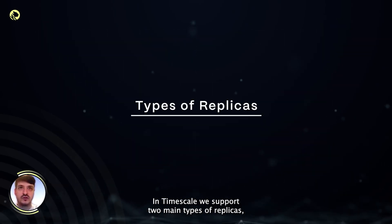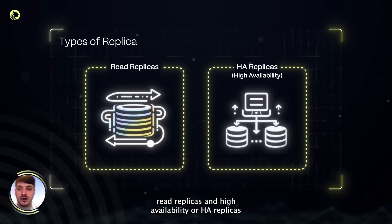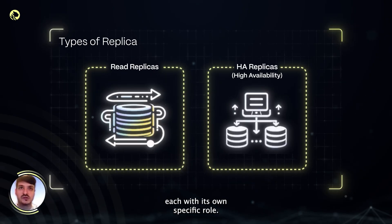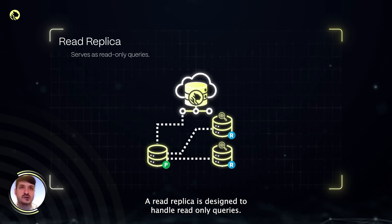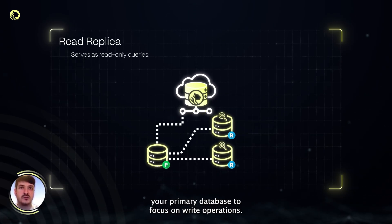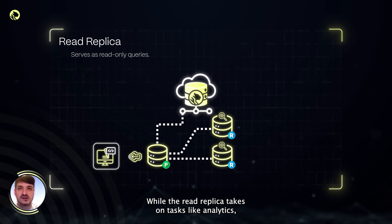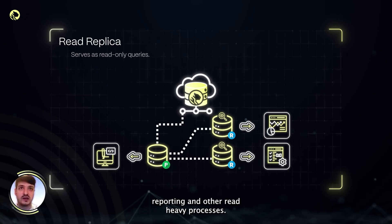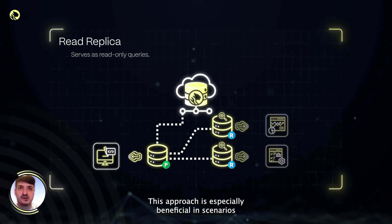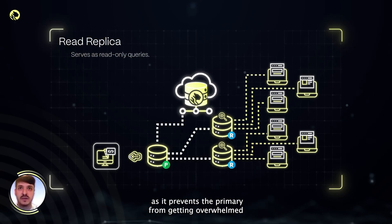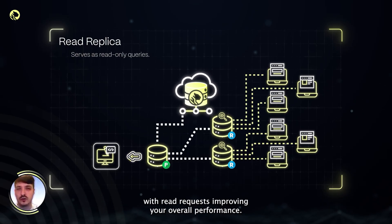In Timescale, we support two main types of replicas: read replicas and high availability, or HA replicas, each with its own specific role. A read replica is designed to handle read-only queries. This helps balance the load by allowing your primary database to focus on write operations, while the read replica takes on tasks like analytics, reporting, and other read-heavy processes. This approach is especially beneficial in scenarios where you have a large number of users accessing your data, as it prevents the primary from getting overwhelmed with read requests, improving your overall performance.